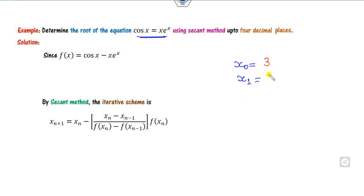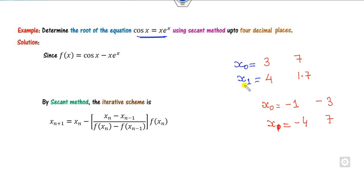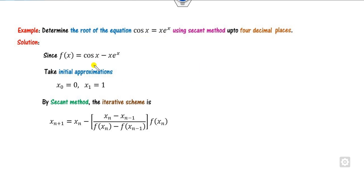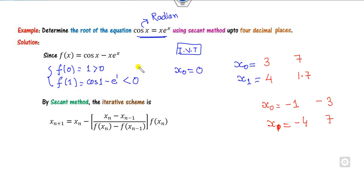You can choose any initial guess: 3, 4, 7, 1.7, x₀ = -1, x₁ = -4, or -3 and +7. That is your choice, but it will take more calculation if you choose wrong values since convergence is not guaranteed. The best way is to check the intermediate value theorem. Find F(0): cos(0) = 1, which is greater than 0. Find F(1): cos(1) − e^1, which is less than 0. They have opposite signs, so you can choose x₀ = 0 and x₁ = 1.